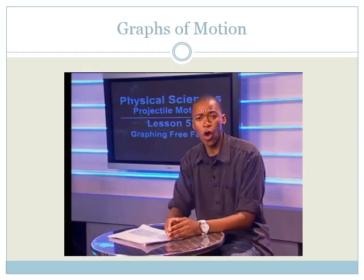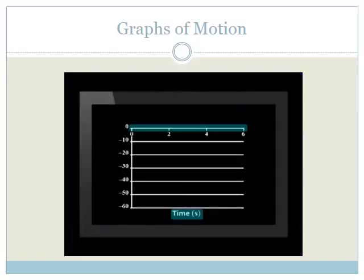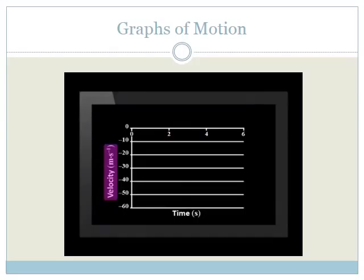So now we are ready to draw a graph of this motion. We plot time on the x-axis and velocity on the y-axis. We plot our points. Since the ball is moving downwards throughout the motion, all the velocity values are negative. This gives us a straight sloping line. The line has a constant negative gradient.